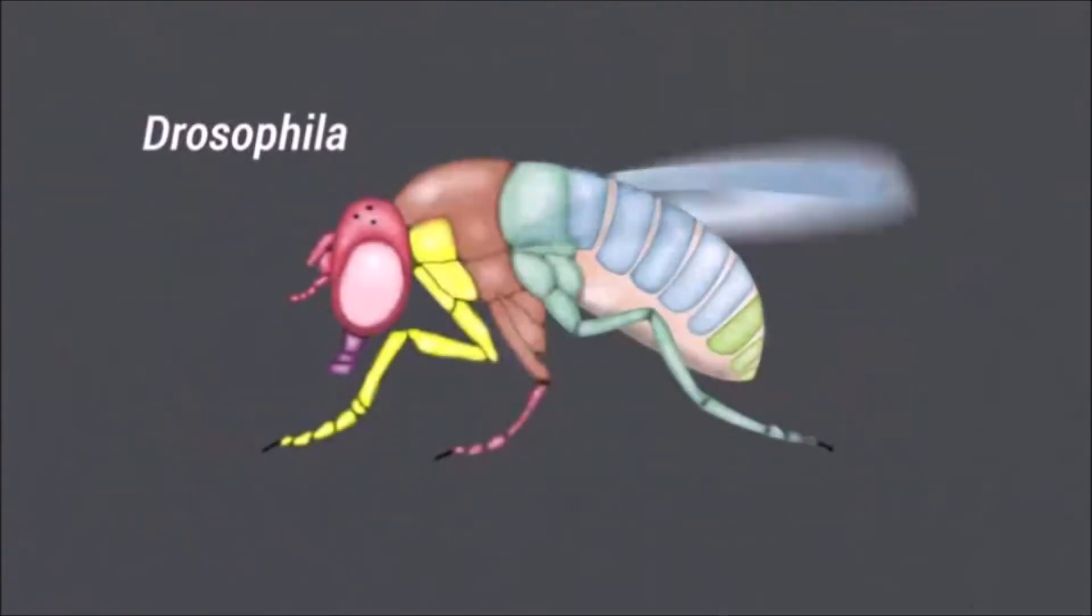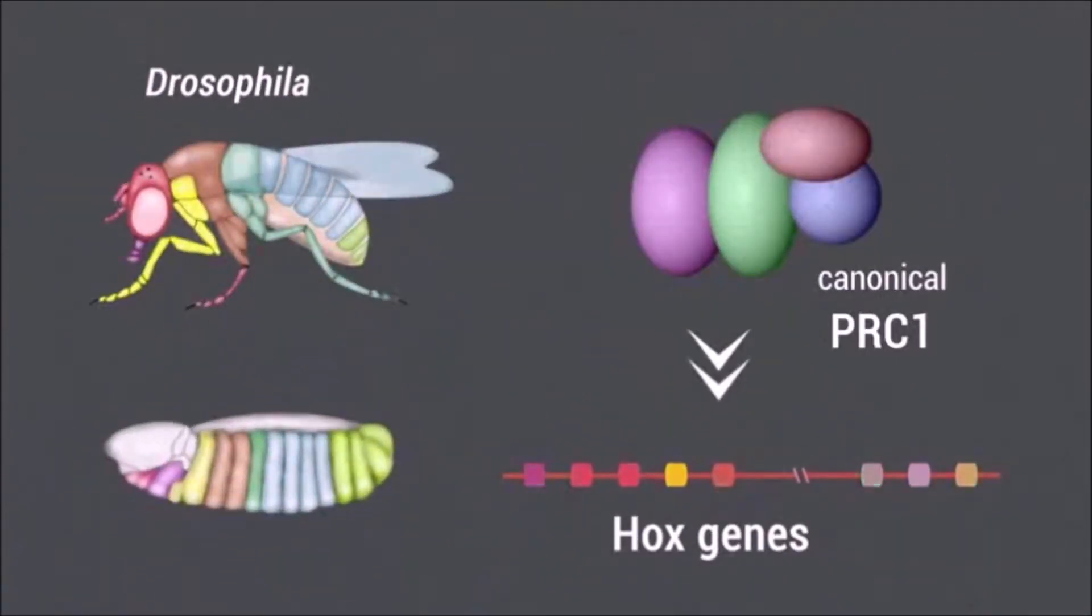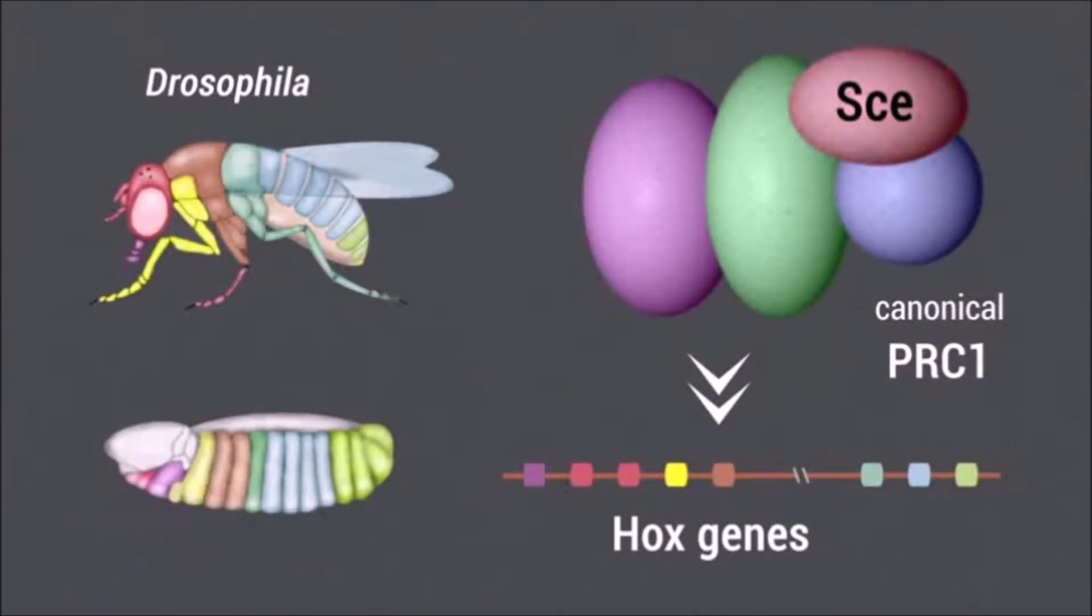In Drosophila, Hox gene expression is regulated by canonical PRC1, which is composed of sex combs extra, posterior sex combs SUS2, and two proteins that are specific components of this complex: polyhomeotic and polycomb.